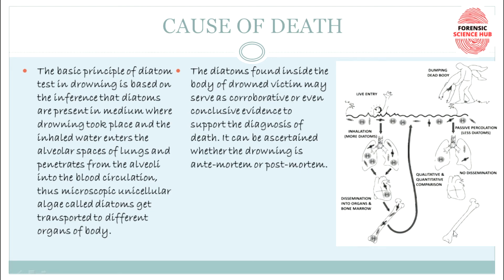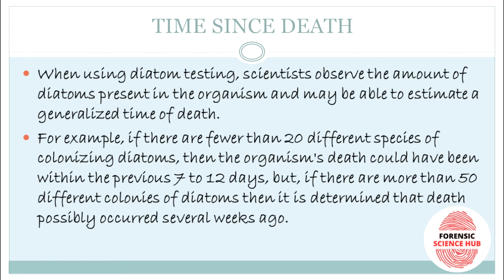Time since death can also be determined using diatom testing by observing the amount of diatoms present in the organism. For example, if fewer than 20 different species of colonizing diatoms are present in the sample, the death could have occurred within the previous 7 to 12 days. If more than 50 different colonies of diatoms are found, death possibly occurred several weeks ago. These are estimations and are not conclusive.